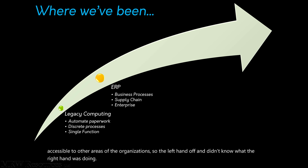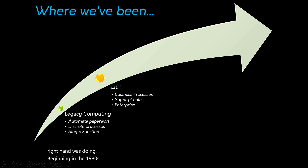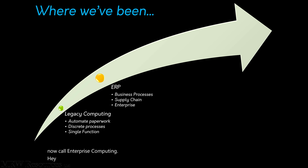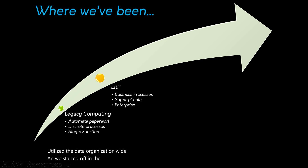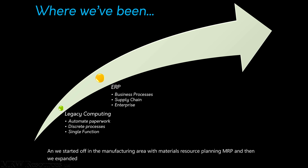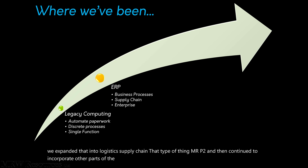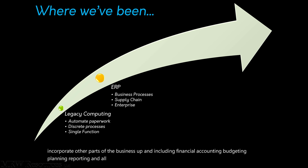Beginning in the 1980s and continuing through the 2000s, we started focusing on what we now call enterprise computing. We had all these data silos, and we wanted to figure out how to put them together and utilize the data organization-wide. We started in the manufacturing area with materials resource planning, MRP, then expanded into logistics and supply chain with MRP2, and continued to incorporate other parts of the business — including financial accounting, budgeting, planning, and reporting — into what we call ERPs, Enterprise Resource Planning Systems.